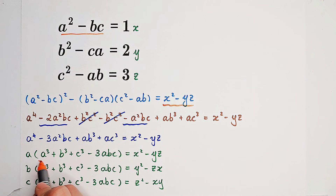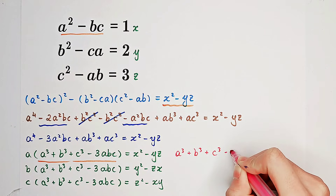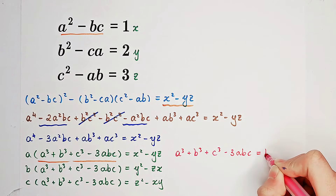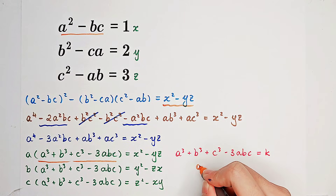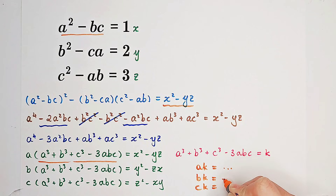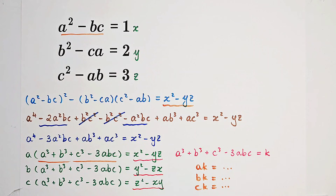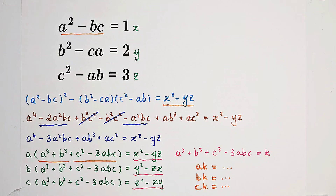This repeated term a cubed plus b cubed plus c cubed minus 3abc is quite annoying, so let's substitute it. Let it equal k. Then we get: a times k equals x squared minus yz, b times k equals y squared minus zx, and c times k equals z squared minus xy. Notice that our right-hand sides still have the same form, so what we can do is subtract the product of the second and third equations from the square of the first one.